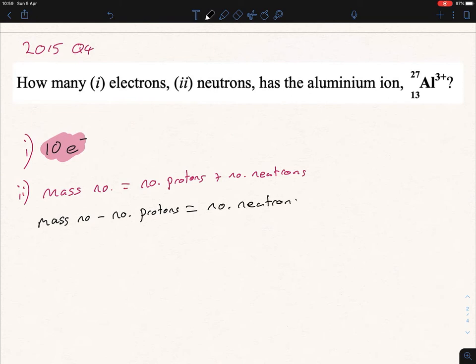And then this is just a simple subtraction. So we're looking for the mass number, and the mass number, like I said, is always the bigger number, and it's 27. Minus the number of protons is 13. So for these calculations, the atomic number and the mass number will not change. The only thing that will change is the number of electrons, so just bear that in mind. So 27 minus 13 equals 14 neutrons.